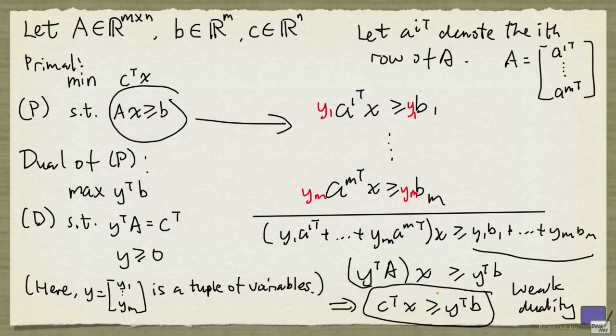And if you happen to find x and y such that this is in fact equal, then x is an optimal solution for p, and y is an optimal solution to d. The question now becomes, is it always the case that you can find x and y such that these are equal? The answer is a qualified yes.